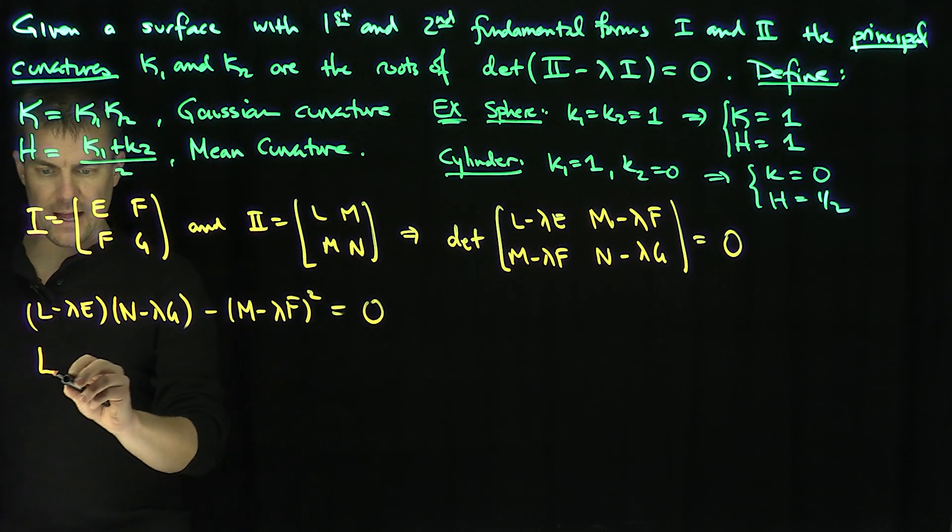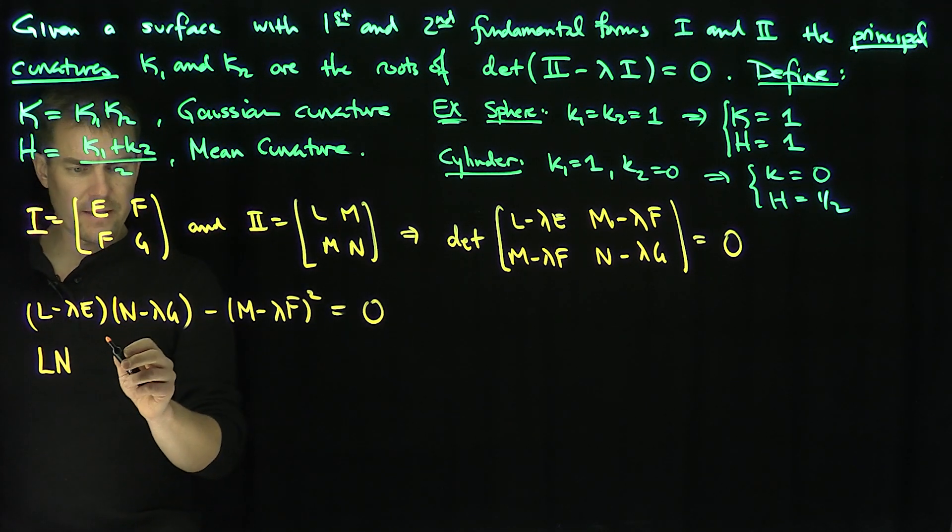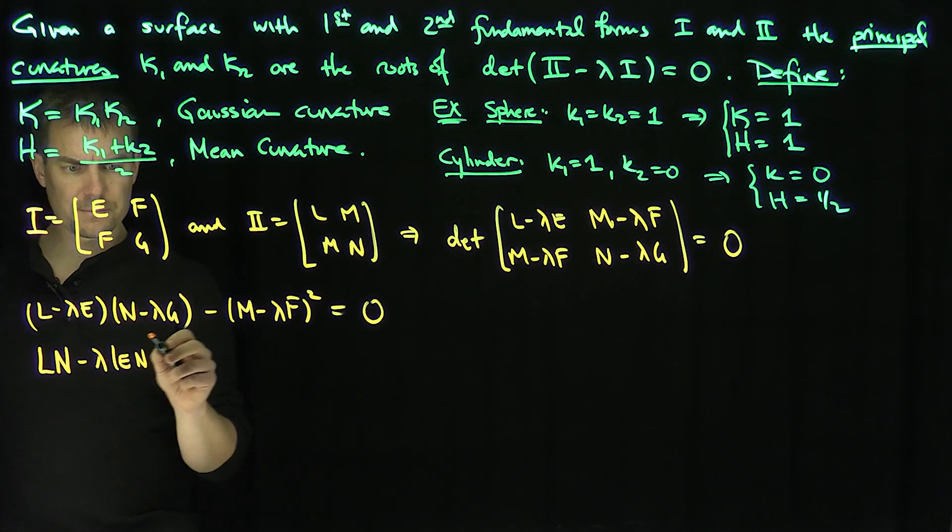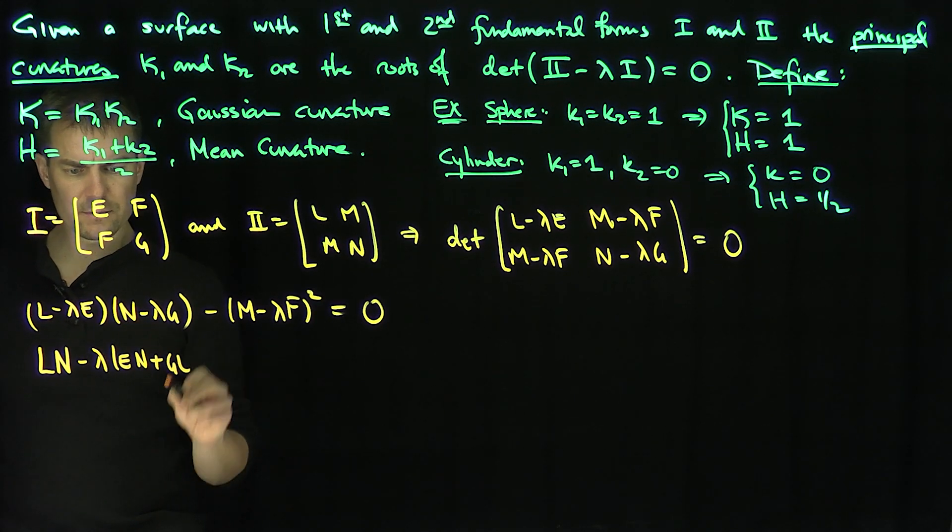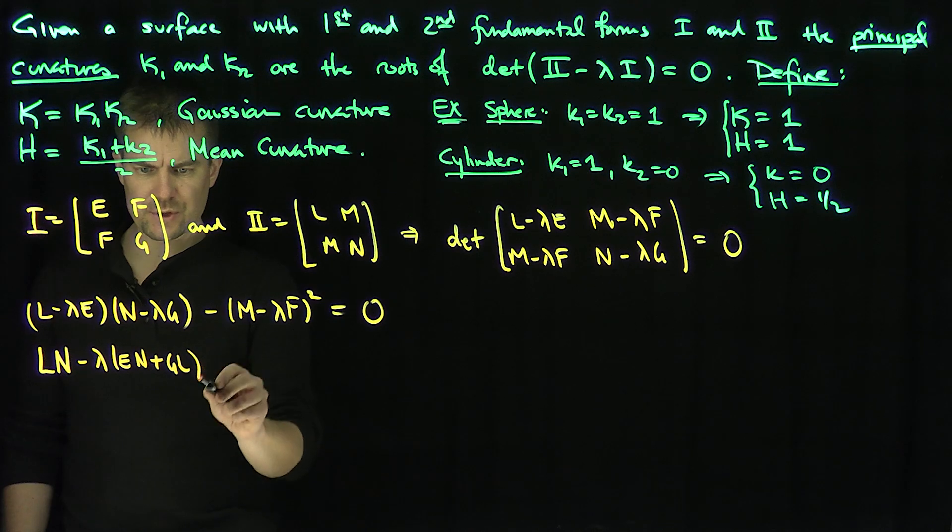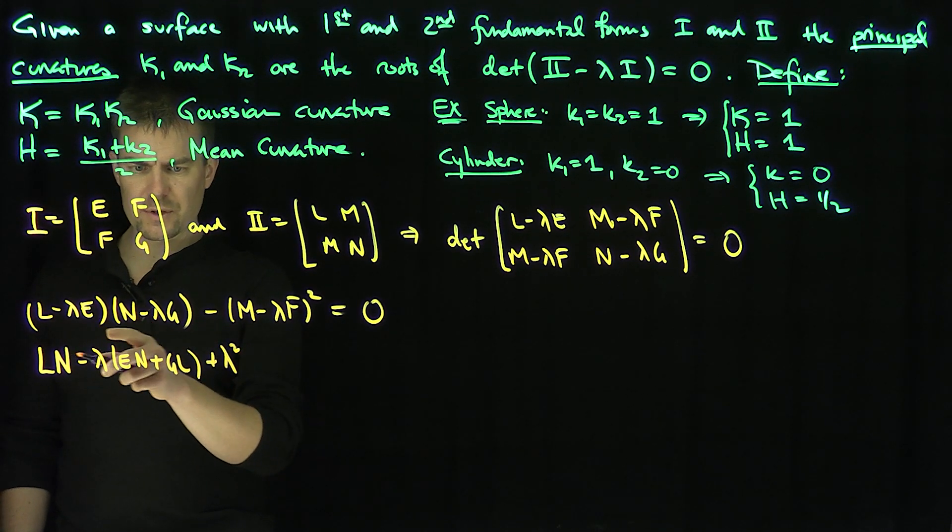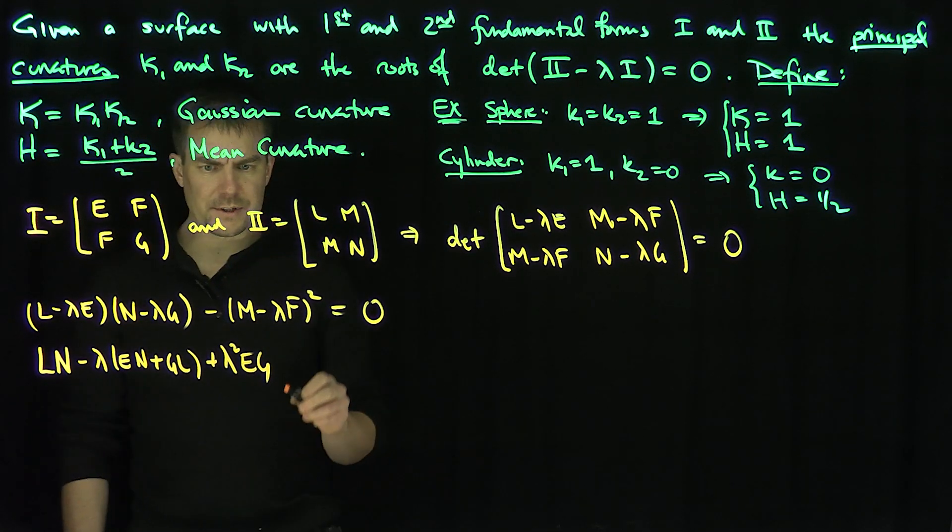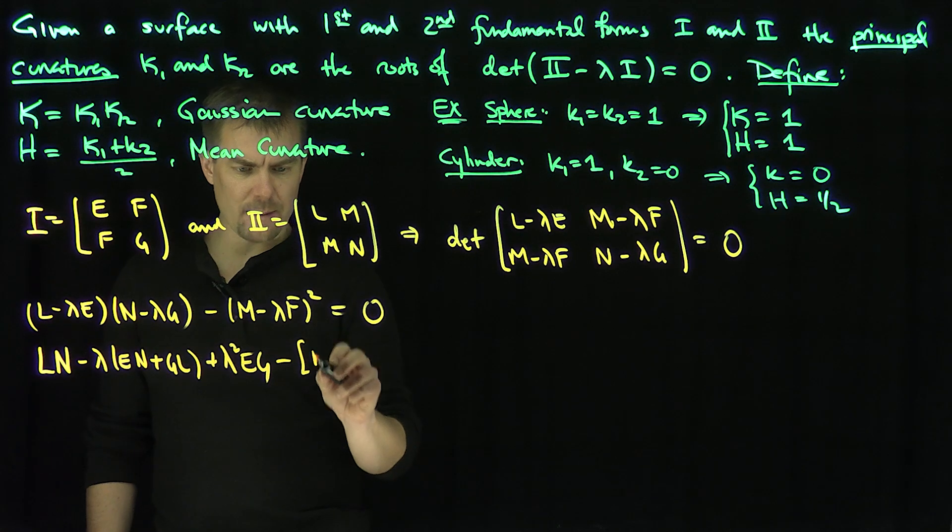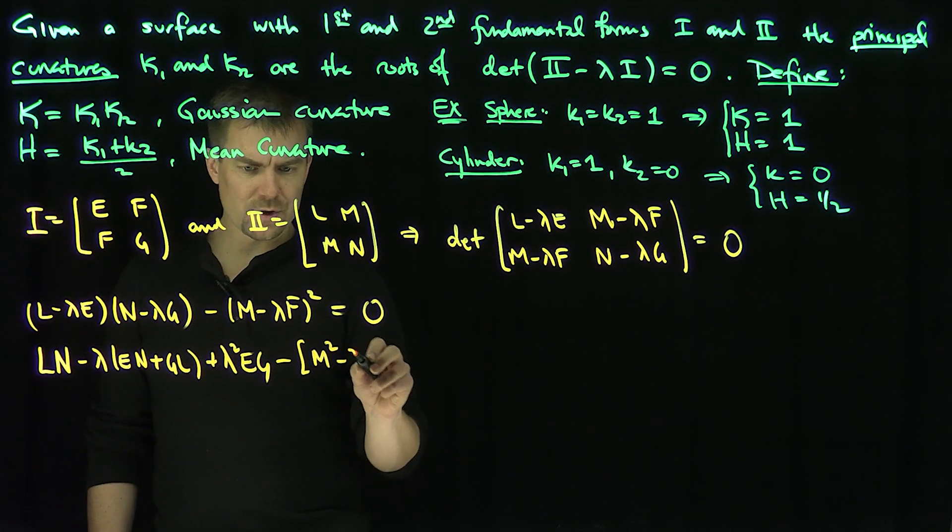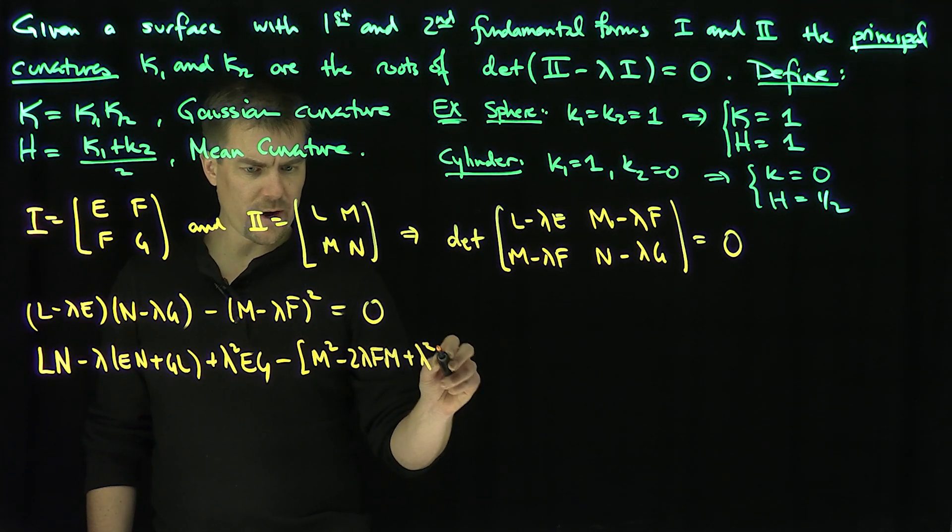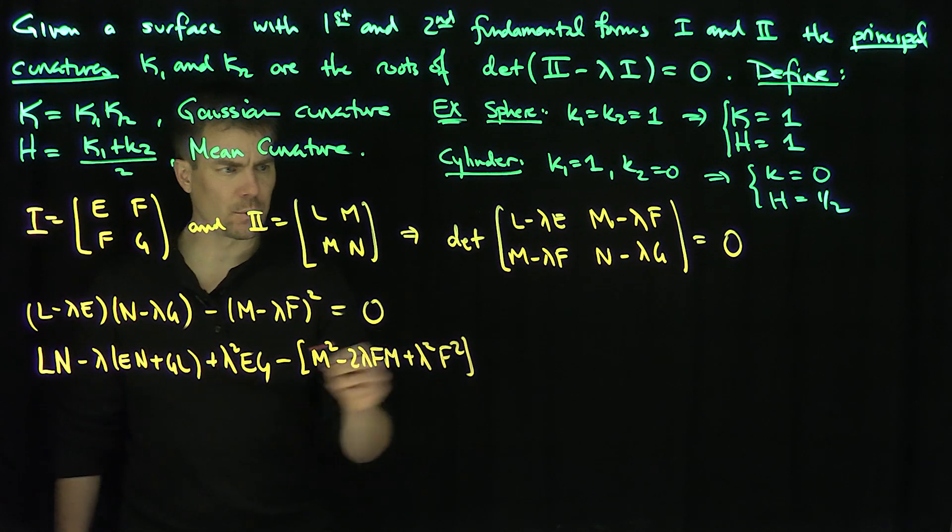Let's foil this out. This is going to be an L N. And then the lambda coefficient is going to be, I'm going to have a minus lambda E N plus GL, like that. And then plus lambda squared, the lambda squared term is going to be E G. Let's foil things out over here. I'm going to have an M squared, then minus 2 lambda M F, plus a lambda squared F squared. Equals 0.